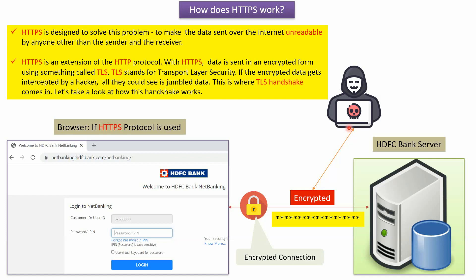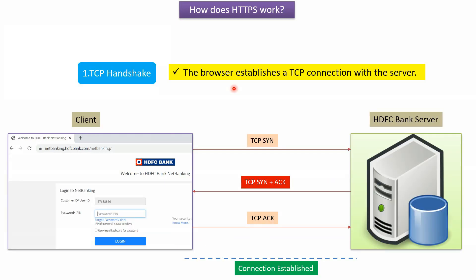We will see how this handshake works next. There are several steps involved in the handshake. Step 1 is the browser establishing a TCP connection with the server. The client sends a TCP SYN request to the server, the server sends back a TCP SYN-ACK to the client, and then the client sends a TCP acknowledgement back to the server. This establishes the TCP connection.